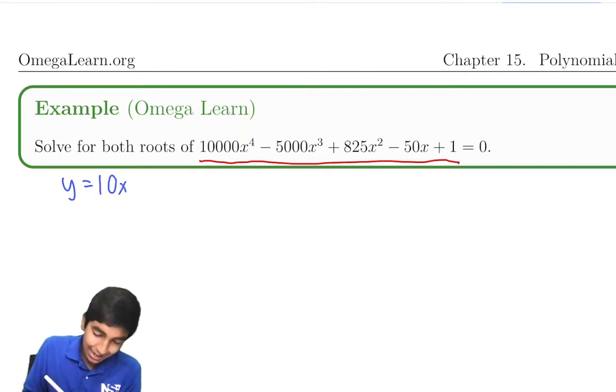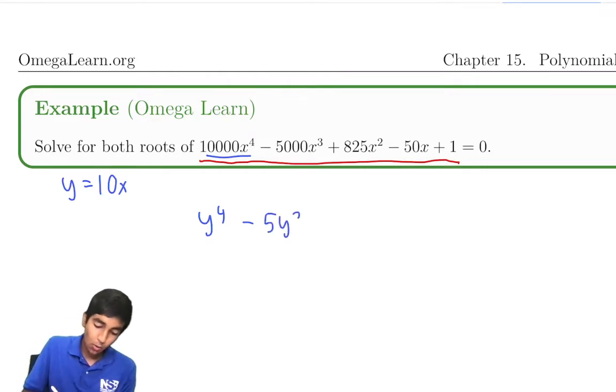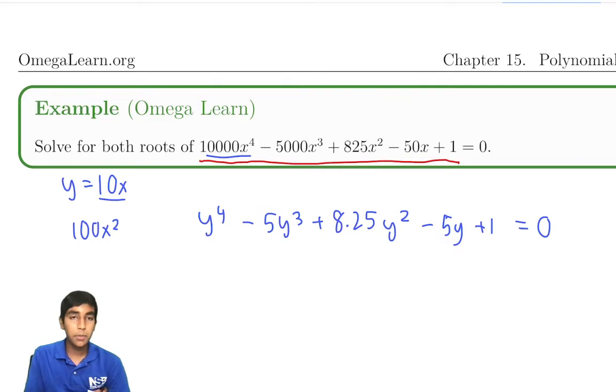Why? Because if y = 10x, then 10,000x⁴ becomes just y⁴. Then -5,000x³ becomes -5y³. Plus 825x² becomes y² times 8.25. And -50x becomes -5y. Plus 1, there's no x's here, no substitution to be done. Now this polynomial looks a lot smaller, a lot more symmetric, doesn't it? 1, 1, negative 5, negative 5, 8.25. This is a symmetric polynomial of even degree, and we know how to solve those.